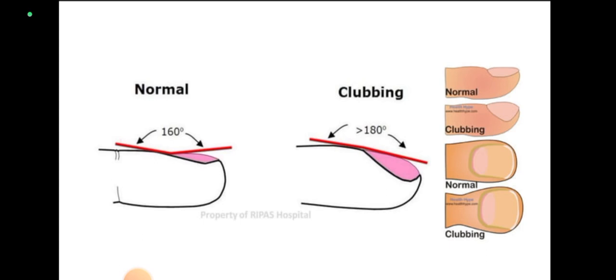See in this diagram, there is enlargement in both horizontal and vertical directions, giving drumstick appearance to the fingers.